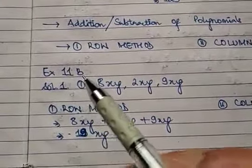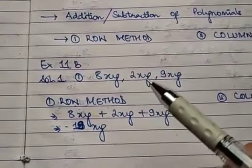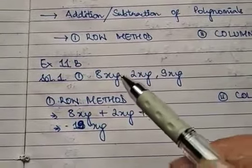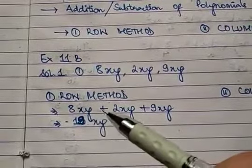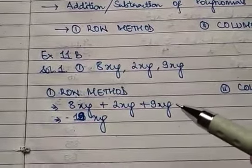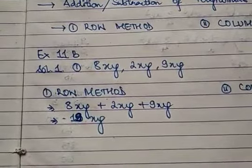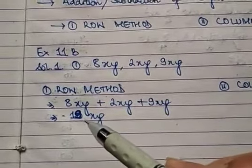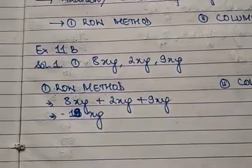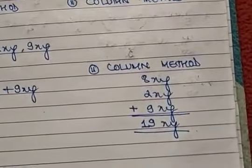Exercise 11b, question 1: we need to add 8xy, 2xy, and 9xy — these are monomials. For the row method: 8xy + 2xy + 9xy. In addition, we only deal with the coefficients. 8 + 2 = 10, 10 + 9 = 19. The variable remains the same, so the answer is 19xy.